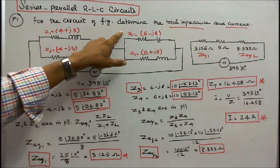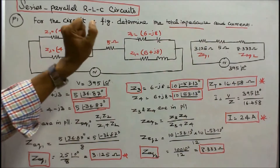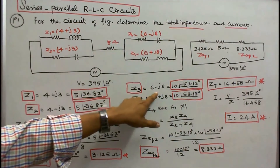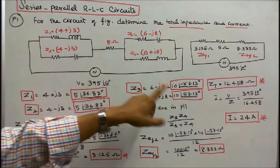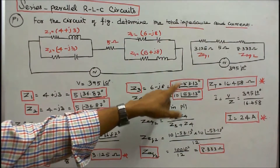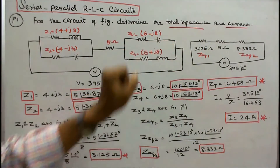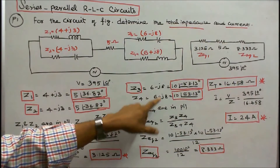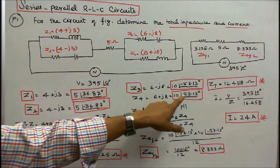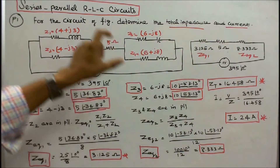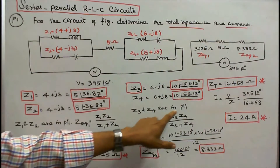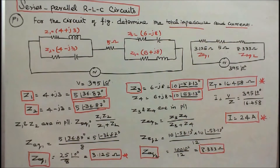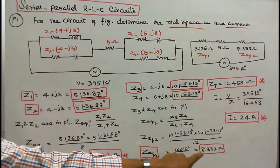Z3 and Z4 are connected in parallel. Z3 = 6 − j8 in rectangular form; in polar form, 10∠−53.13°. Z4 = 6 + j8 in rectangular form; in polar form, 10∠53.13°. The equivalent is Z3·Z4 divided by Z3 + Z4, giving Z_equivalent = 8.333 ohms.